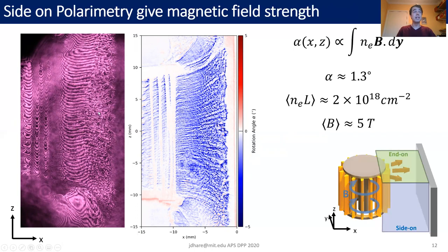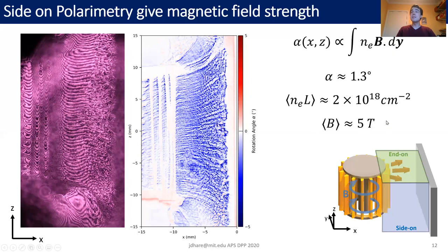In the interferometry our electron density is also fluctuating quite wildly, so it's entirely possible that all of these fluctuations in the rotation angle are simply due to contributions from the electron density, and the magnetic field itself could be rather smooth. I'll come back to that later when I discuss the magnetic Reynolds number of this flow. For now, we take a representative average rotation angle of around 1.3 degrees and, in combination with our line-integrated electron density from the end-on interferometry, we can work out an average magnetic field of around five Tesla. That is confirmed by measurements using B-dot probes and Faraday rotation in other experiments where the plasma is more stable.